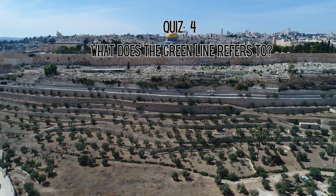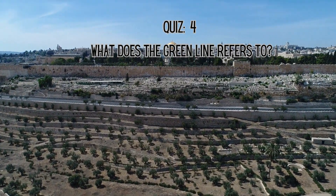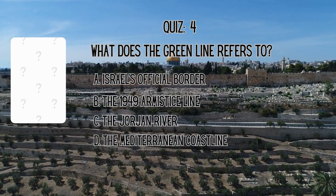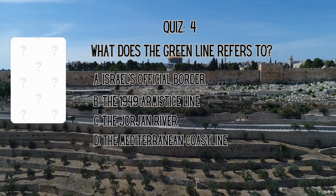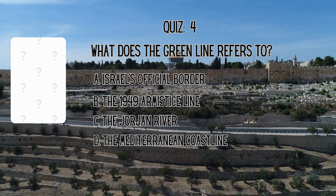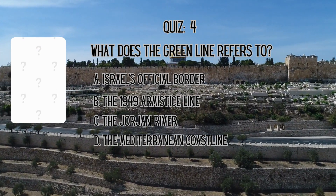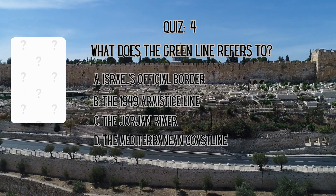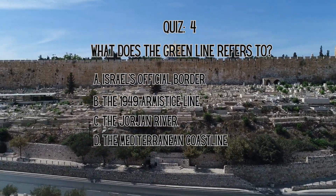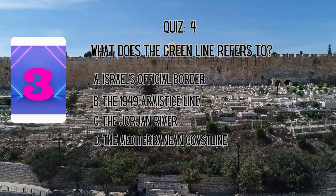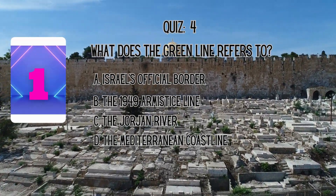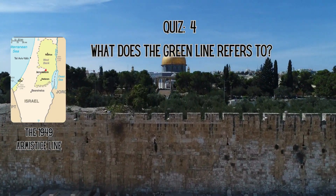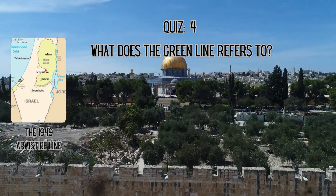Next question: What does the Green Line refer to? Is it A. Israel's official border, B. The 1949 Armistice Line, C. The Georgian River, or D. The Mediterranean coastline? The correct answer is the 1949 Armistice Line.